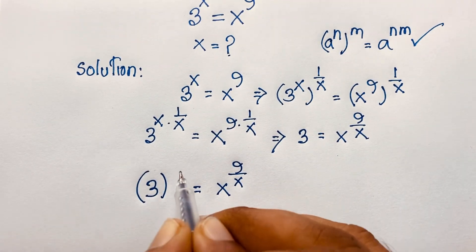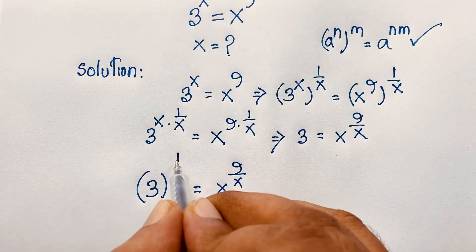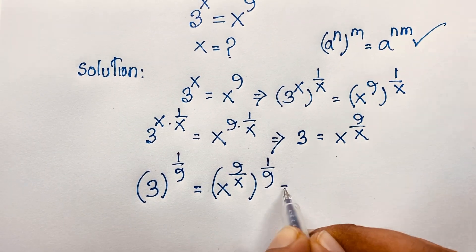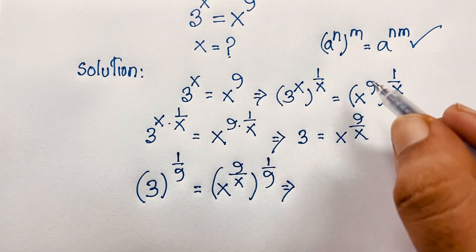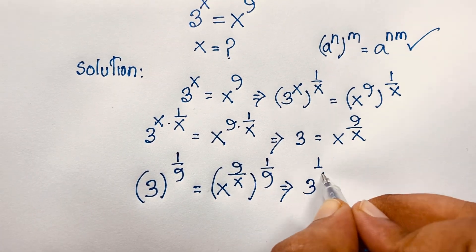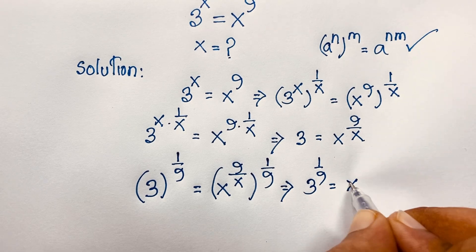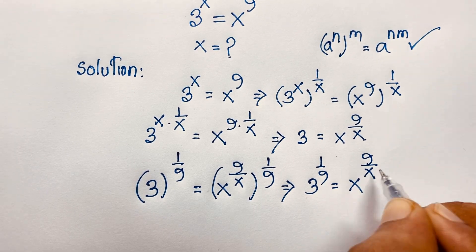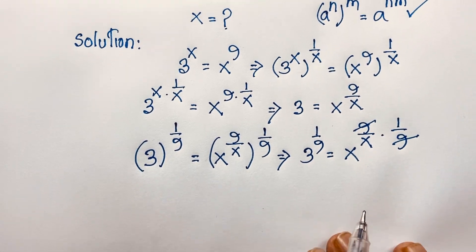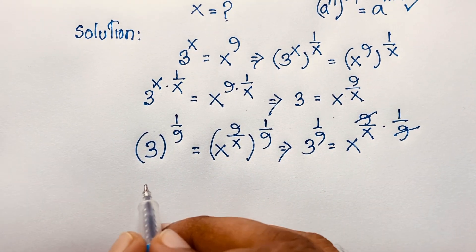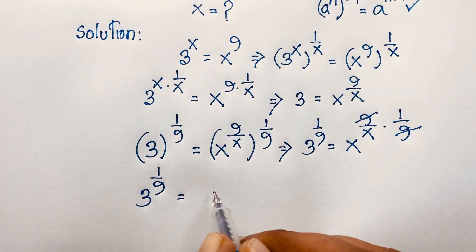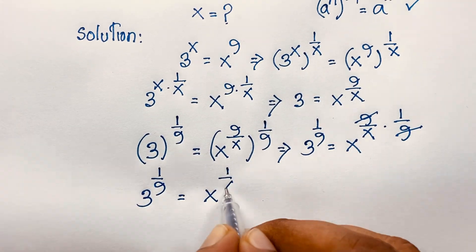Now I apply exponent 1 over 9 to both sides. Using the same formula again, it becomes: 3 to the power 1 over 9 is equal to x to the power 9 over x times 1 over 9. The 9s cancel out, and we get: 3 to the power 1 over 9 is equal to x to the power 1 over x.